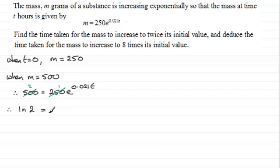So that's going to be 0.021t. Okay, so to get t, all I need to do is just divide the natural log of 2 by 0.021, and if you do that on your calculator you should find you get 33.007 and so on.